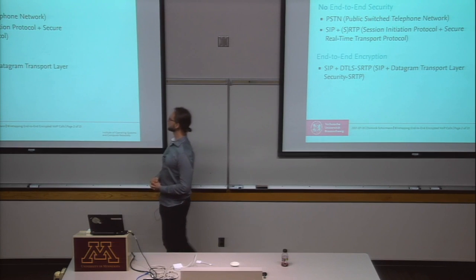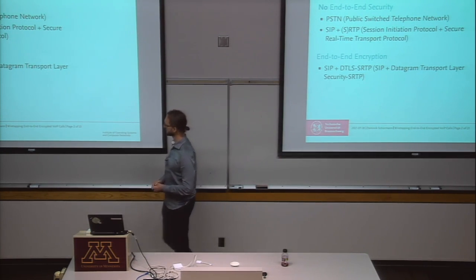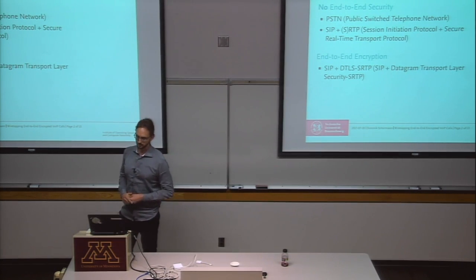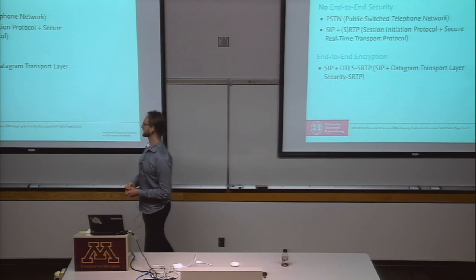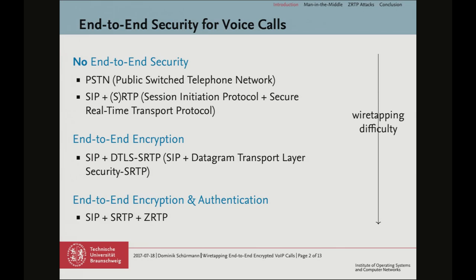Then we have DTLS — datagram transport layer security — used to exchange a secret for SRTP. That's end-to-end encryption. And then we have end-to-end encryption and authentication: ZRTP plus SRTP. Obviously, for an evil operator, it gets more difficult down the line. So this is the space we are looking into.